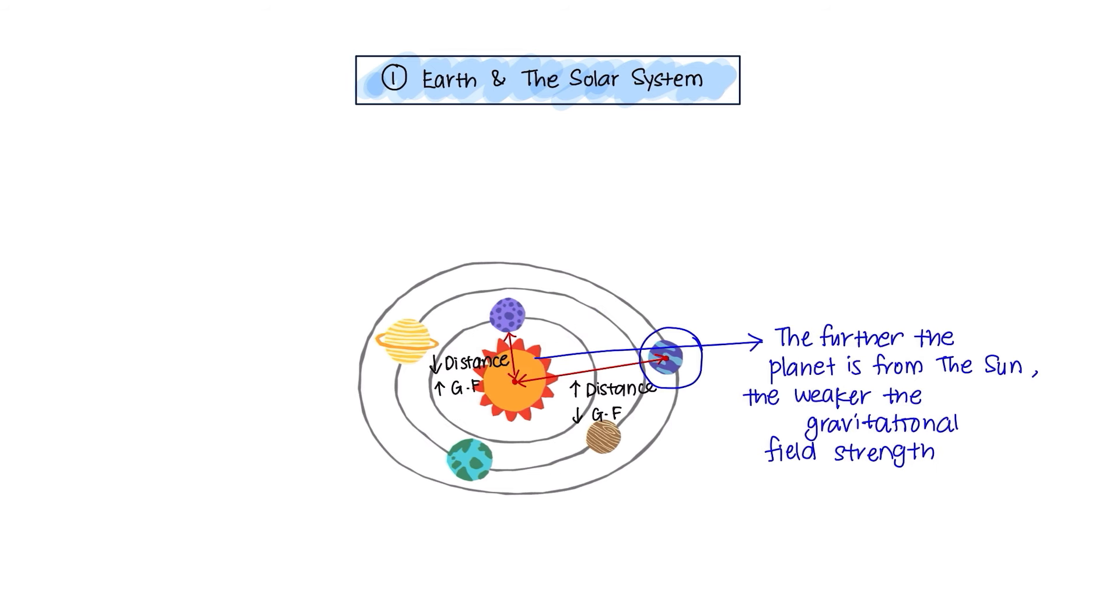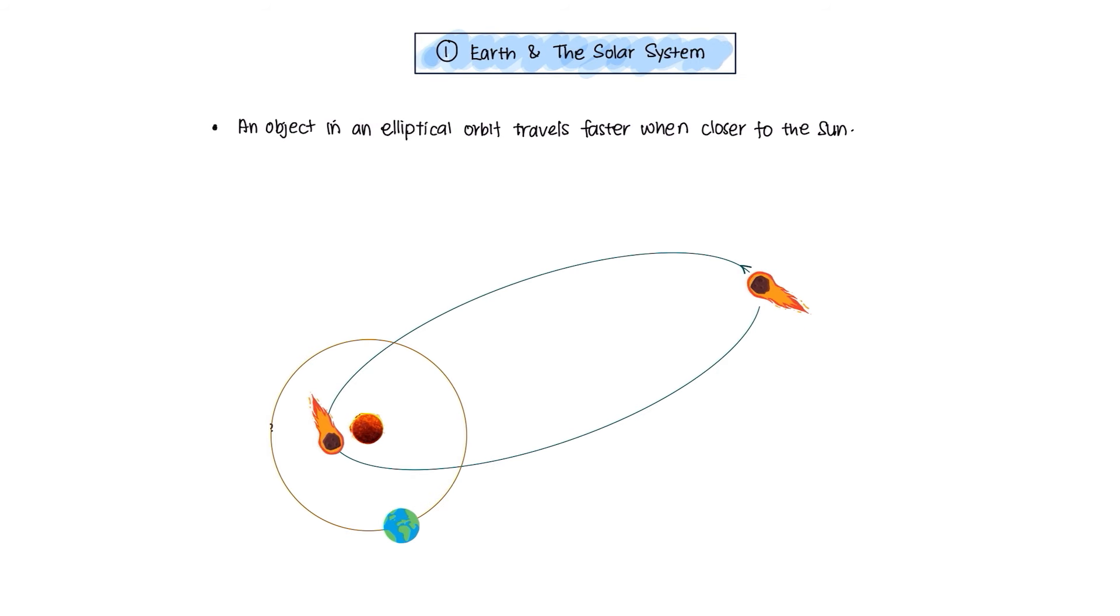So, the further the planet is from the Sun, the weaker its gravitational field strength is and the slower it will orbit around the Sun. Therefore, an object in elliptical orbit travels faster when closer to the Sun.